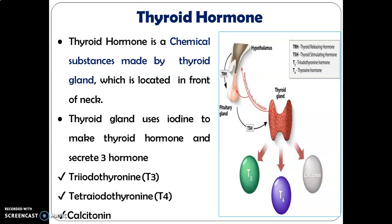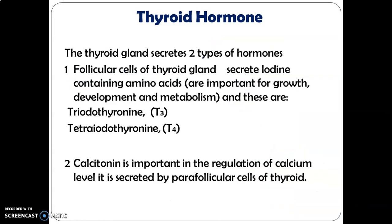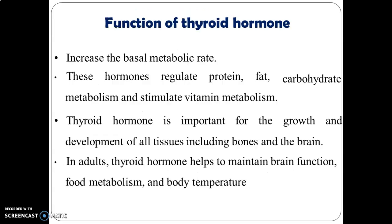The three hormones are triiodothyronine, tetraiodothyronine, and calcitonin. The thyroid gland secretes two types of hormones. First, follicular cells of the thyroid gland secrete iodine-containing amino acids — these are triiodothyronine (T3) and tetraiodothyronine (T4) — which are important for growth, development, and metabolism. Second, calcitonin is important in the regulation of calcium levels and is secreted by parafollicular cells of the thyroid.